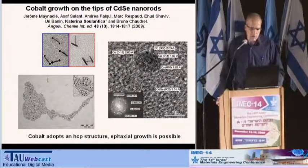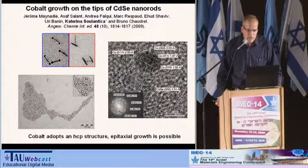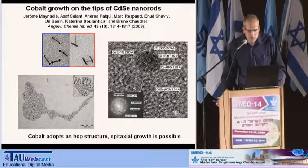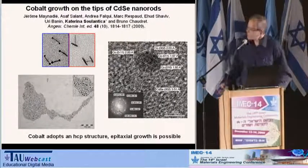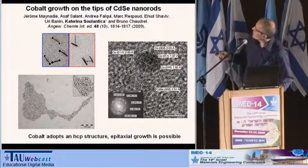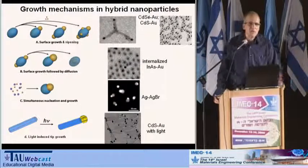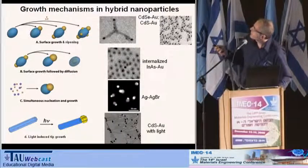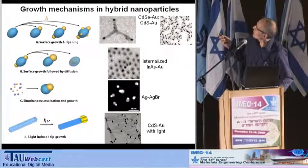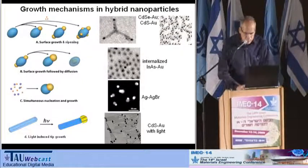An epitaxial case was demonstrated in a collaboration with Caterina Solantica and Bruno Chaudret in France, looking at cobalt growth on the tips of cadmium selenide nanorods via a high-temperature reaction. High-resolution TEM showed that cobalt adopts an HCP phase, assigned to allow for epitaxial growth in this system. To summarize the growth mechanisms discussed: surface growth and ripening lead to tip growth or one-sided growth, and illumination can achieve one-sided growth for cadmium sulfide, among other mechanisms.